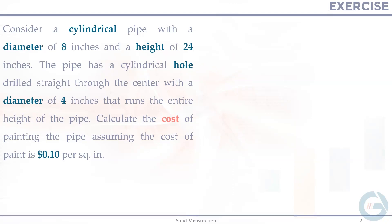We have a quite tricky but manageable problem. We have a cylindrical pipe with a diameter of 8 inches and a height of 24 inches. The pipe has a cylindrical hole drilled straight to the center with a diameter of 4 inches that runs the entire height. Calculate the cost of painting the pipe, assuming the cost of paint is $0.10 per square inch.